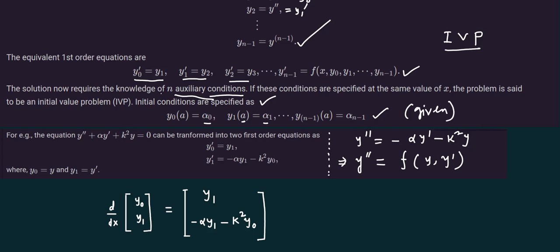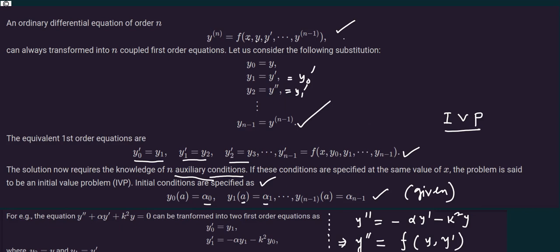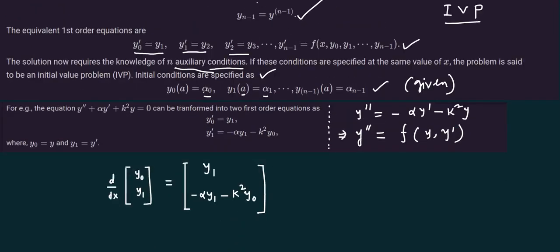Now we will understand how to convert an nth order differential equation into n coupled first order equations. Let us consider this example: y double prime equals to alpha y prime plus k squared y equals to 0. Let us first substitute y0 equals to y — two variables are needed.